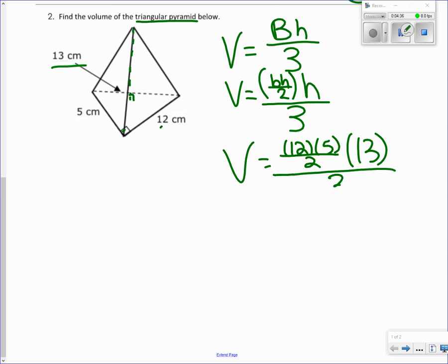We know we're going to get rid of this two down here in the denominator. We know two goes into 12 six times, so we got rid of that. Now I'm going to just rewrite this so it looks neater. So six times five is 30 times 13. We still have this three down here in the denominator.